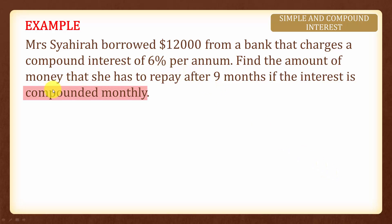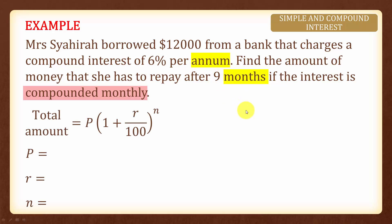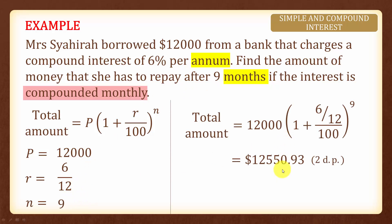In this example, the interest is compounded monthly; however, the compound interest rate is per year, or per annum, and the amount she has to repay is after nine months. Therefore, we have to convert per annum to per month. The principal amount is twelve thousand dollars. If the rate is six percent per annum, it will be six over twelve percent per month. The number of times compounded will be nine times, since we compound monthly over nine months. Applying the formula gives us the answer.